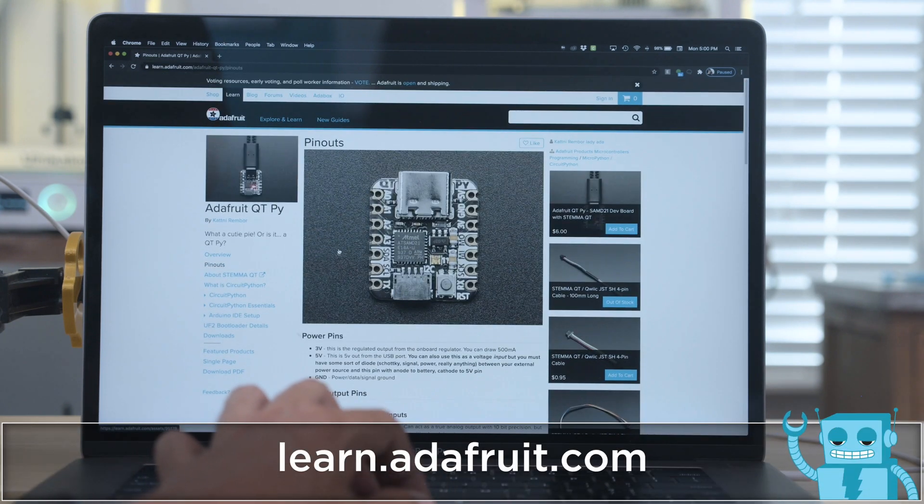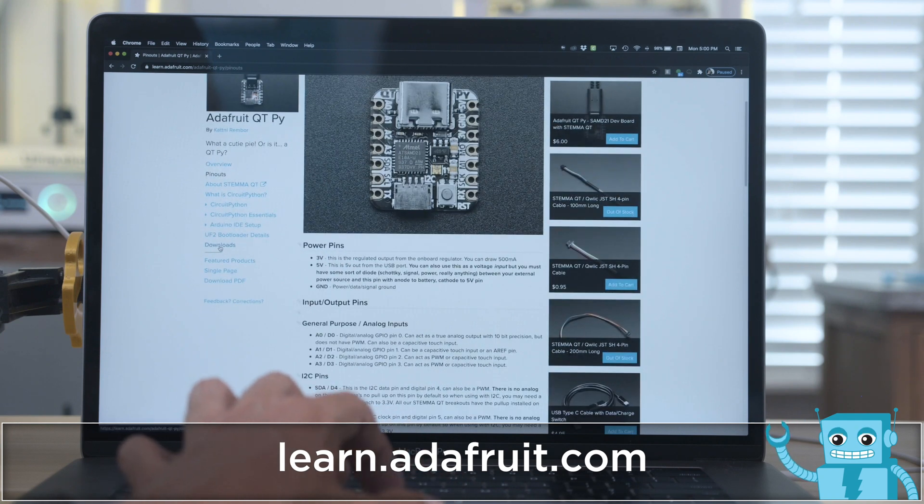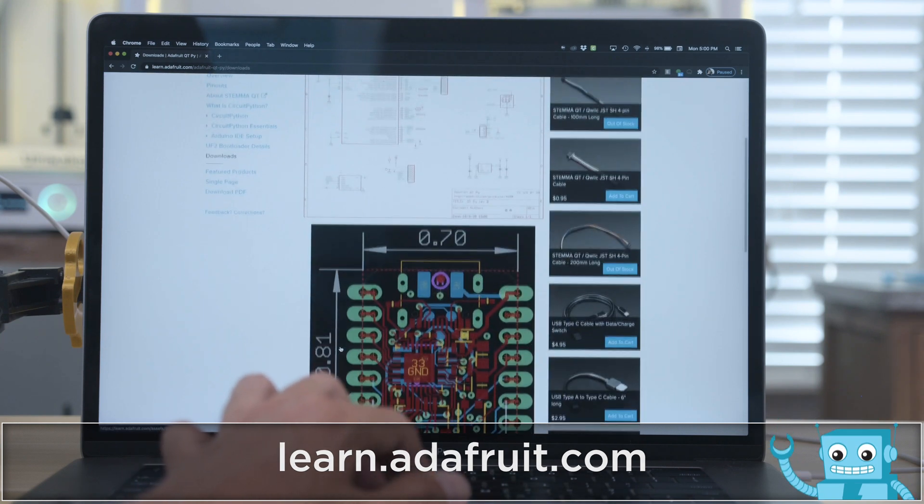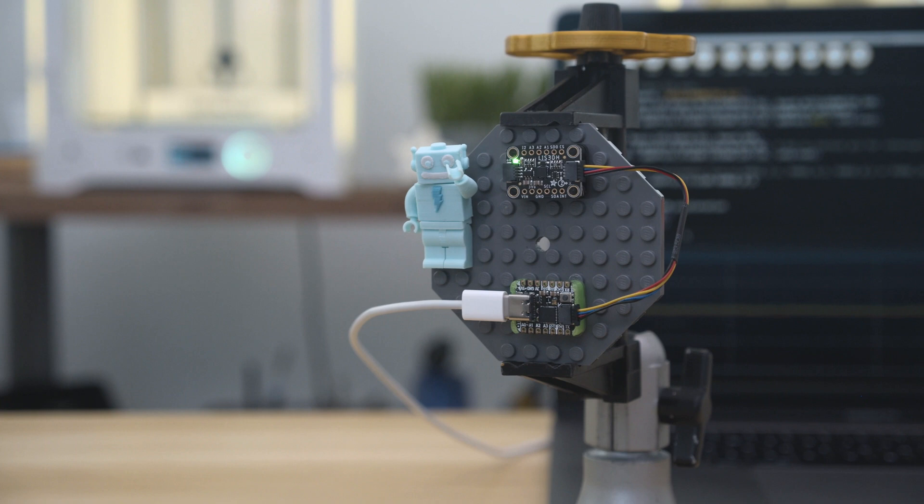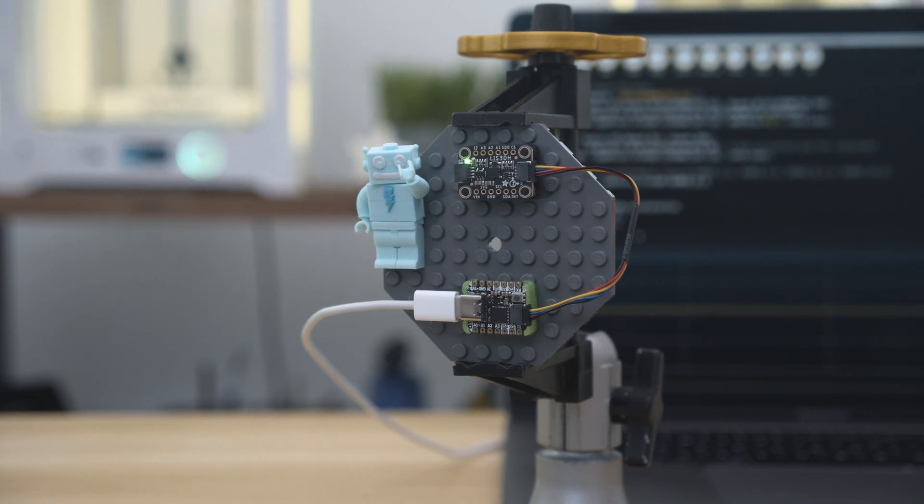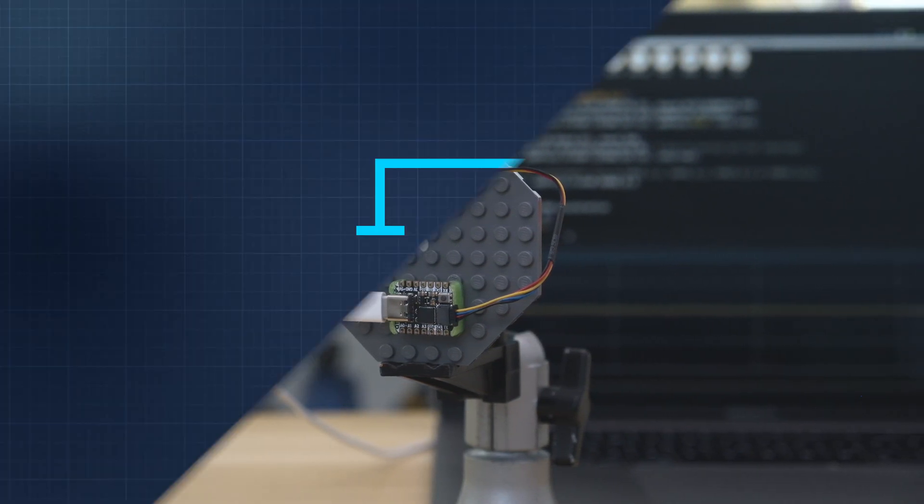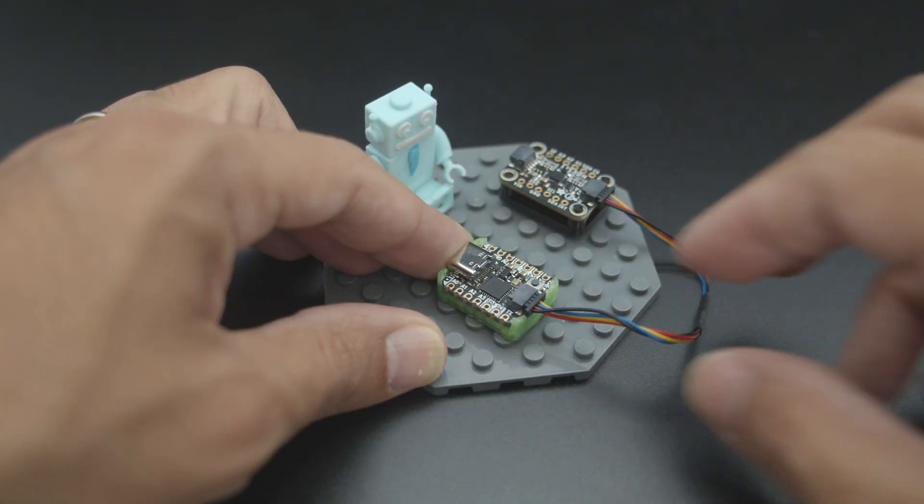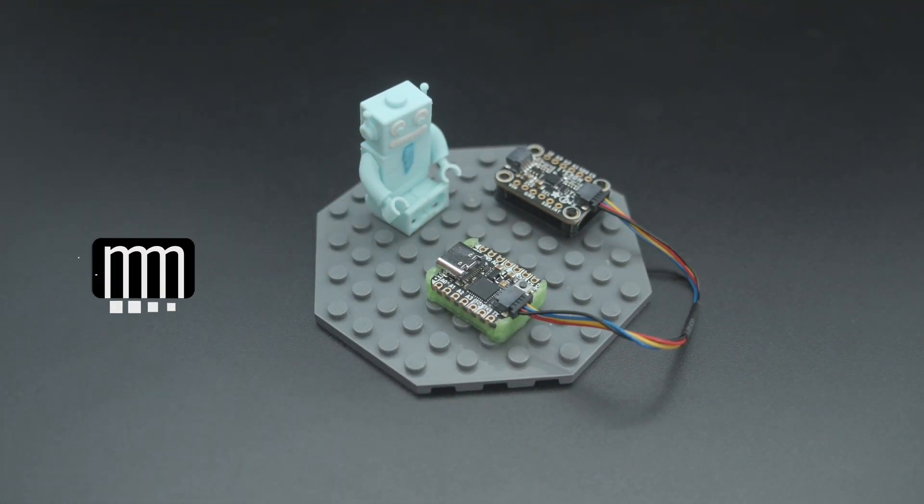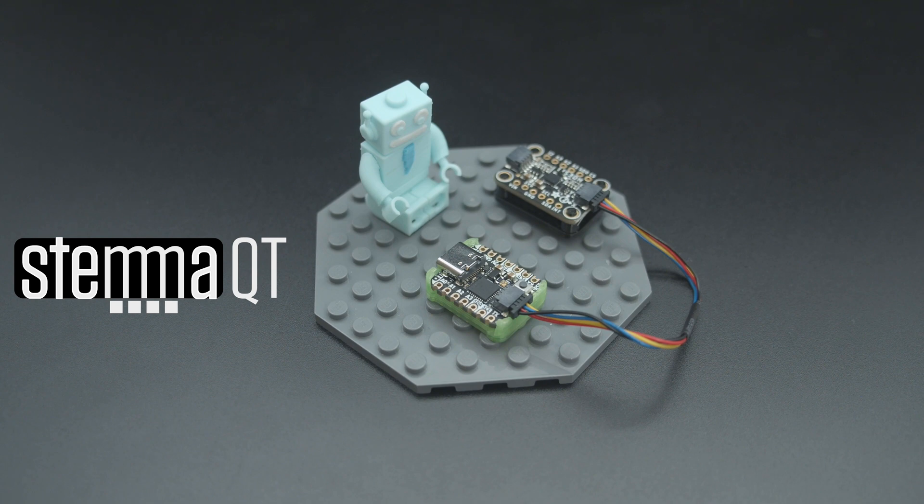Check out the CutiePie Learn Guide for a full breakdown of the pinouts, board profiles for Arduino, and the CAD files. StemAQT makes it easy to plug and play with I2C sensors so you can quickly get your projects up and running. Adafruit has tons of StemAQT breakouts so you can play with a whole ecosystem of sensors and displays.